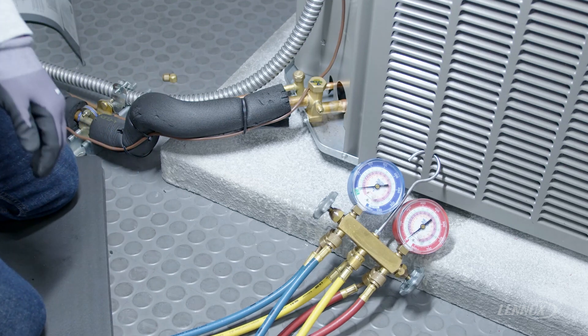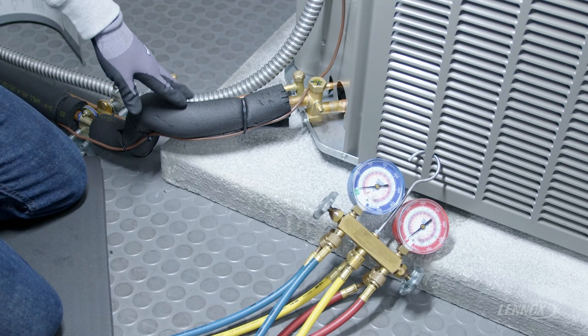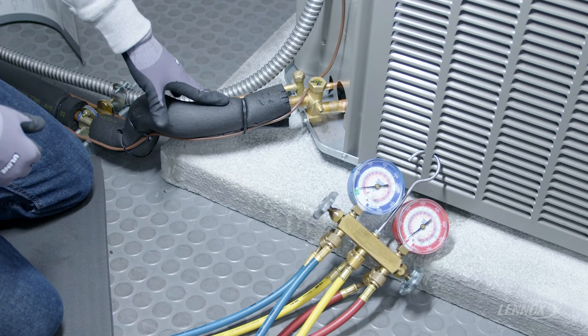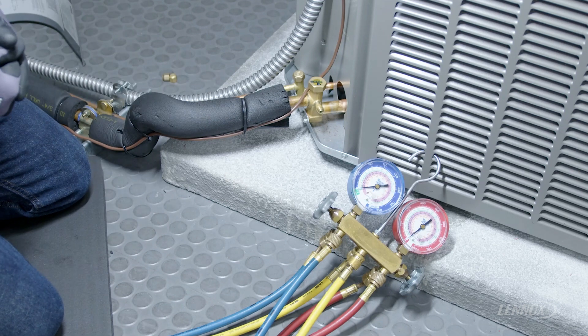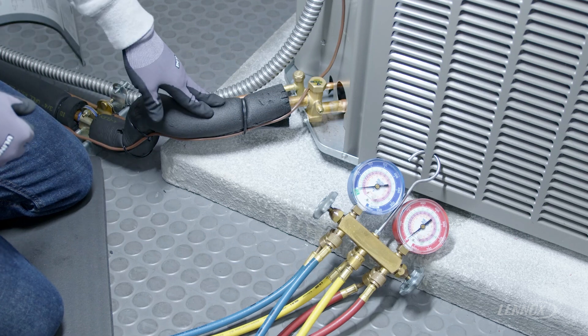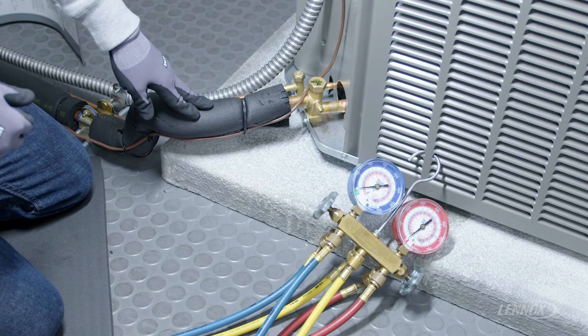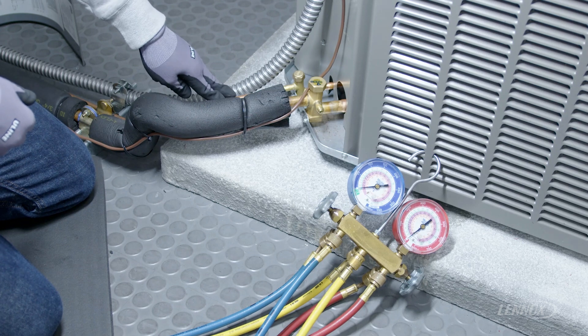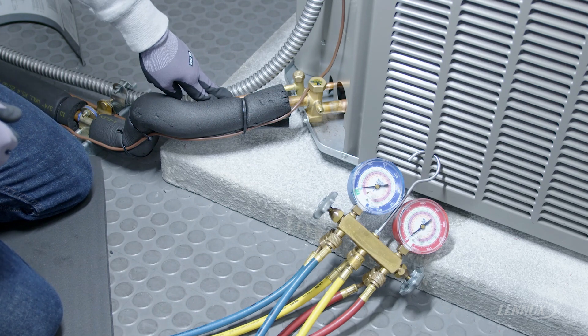Once you've removed your caps, you then need to identify which line you're going to hook which hose of your refrigerant gauge set up to. There are two lines on every air conditioning system, a larger line that we call the suction line or low side of the system and a smaller line that we call the high side or liquid side of the system.